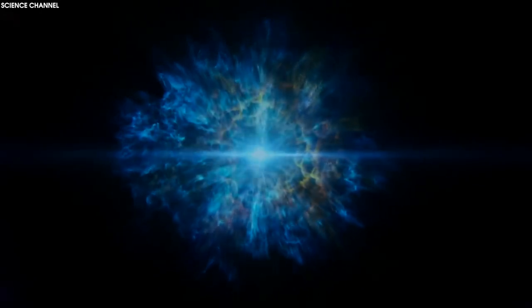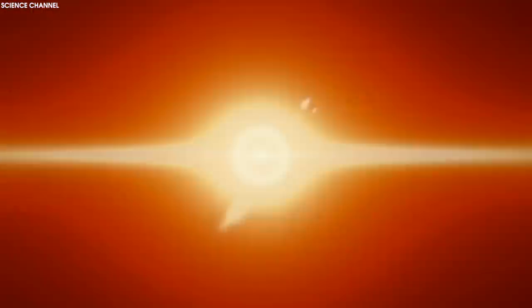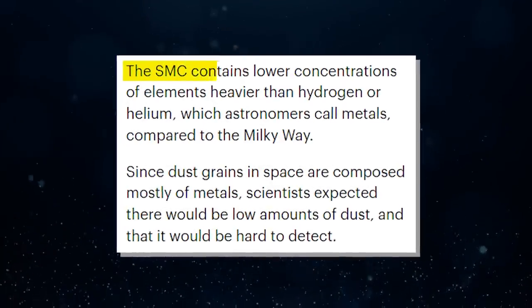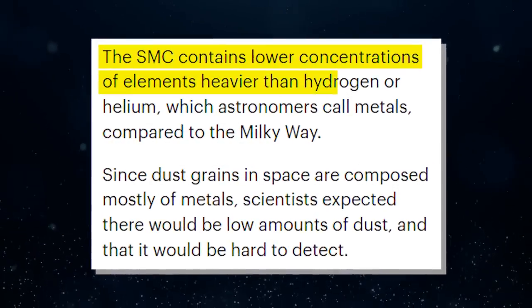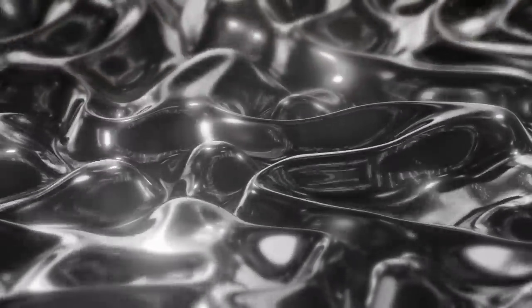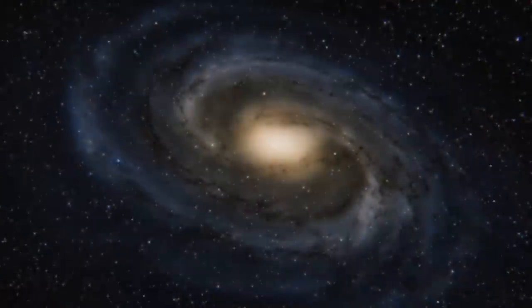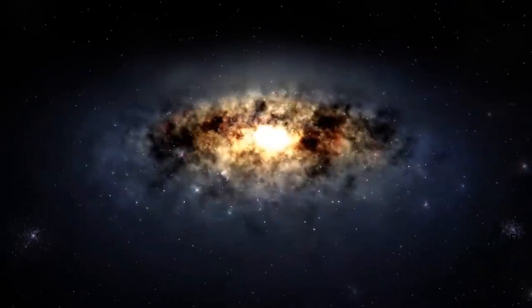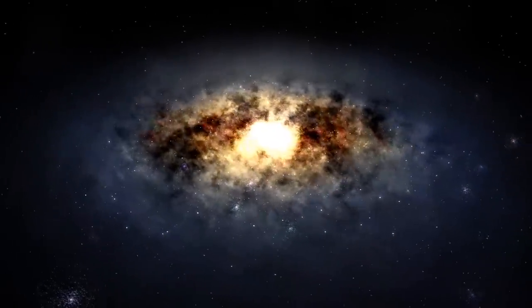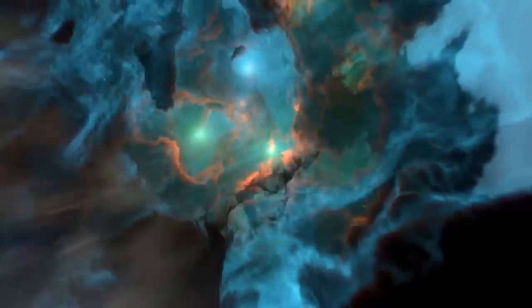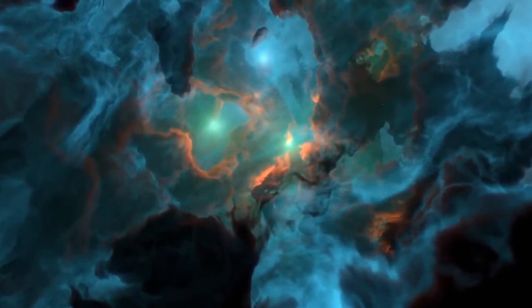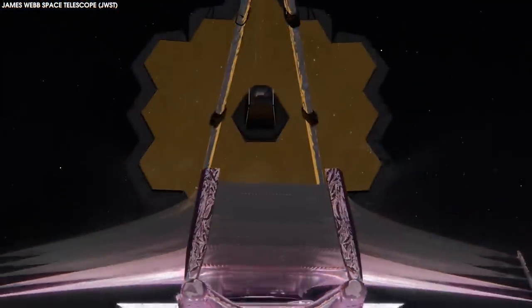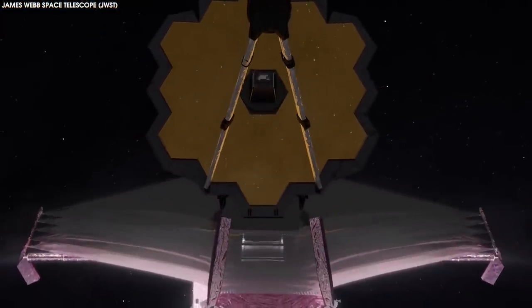The SMC contains lower concentrations of elements heavier than hydrogen or helium, which astronomers call metals, compared to the Milky Way. Since dust grains in space are composed mostly of metals, scientists expected there would be low amounts of dust and that it would be hard to detect. However, the new data from Webb reveals the opposite.